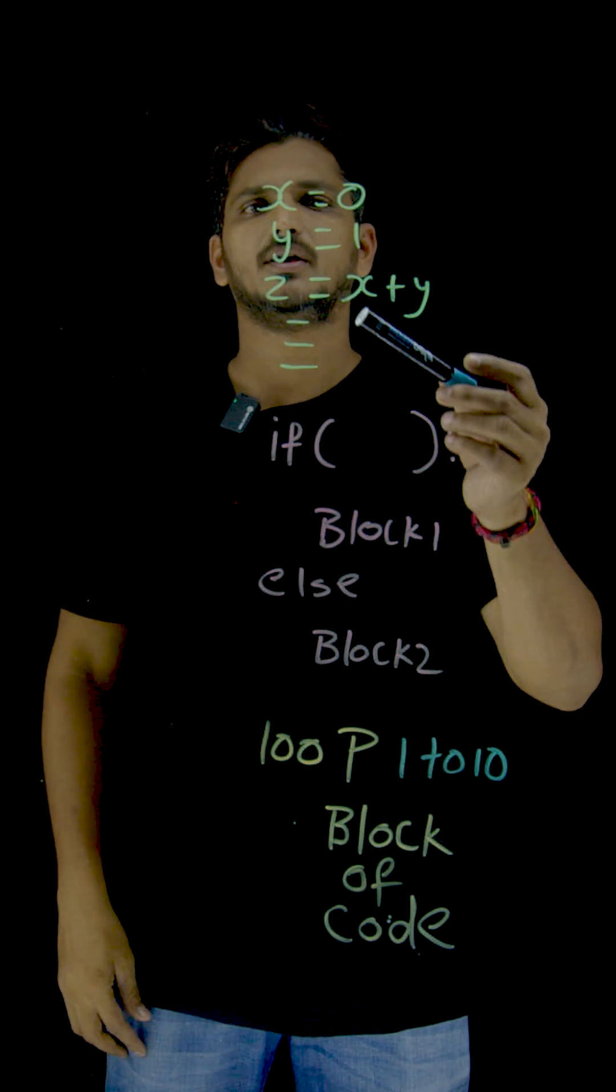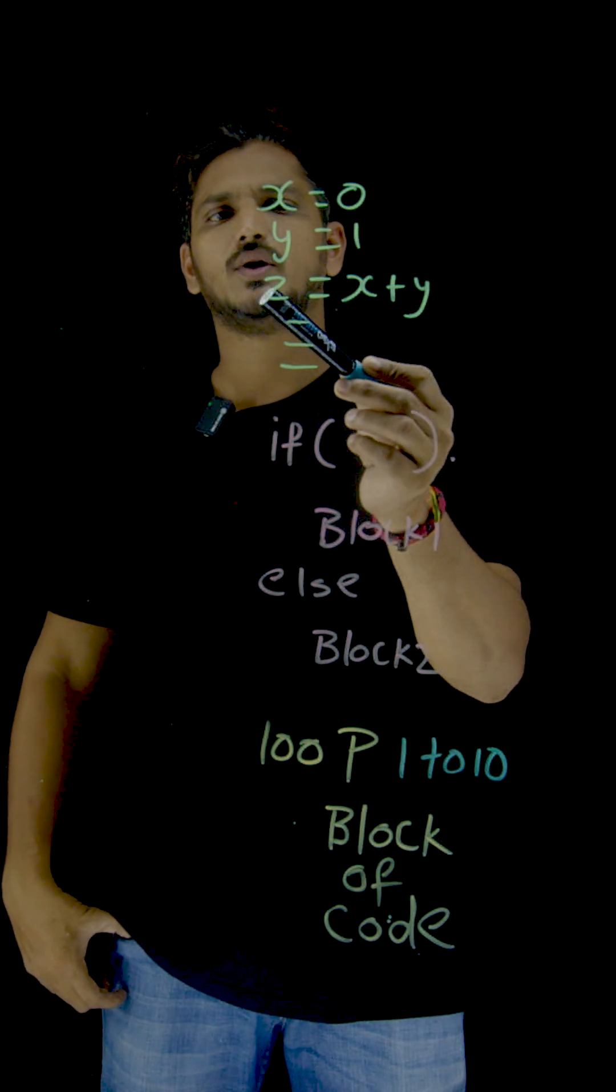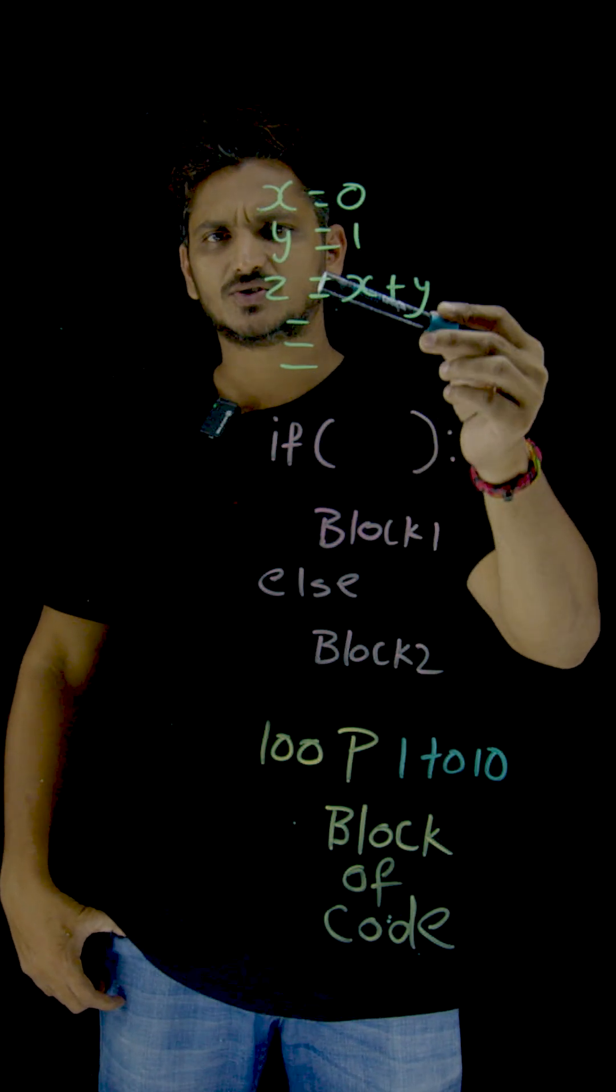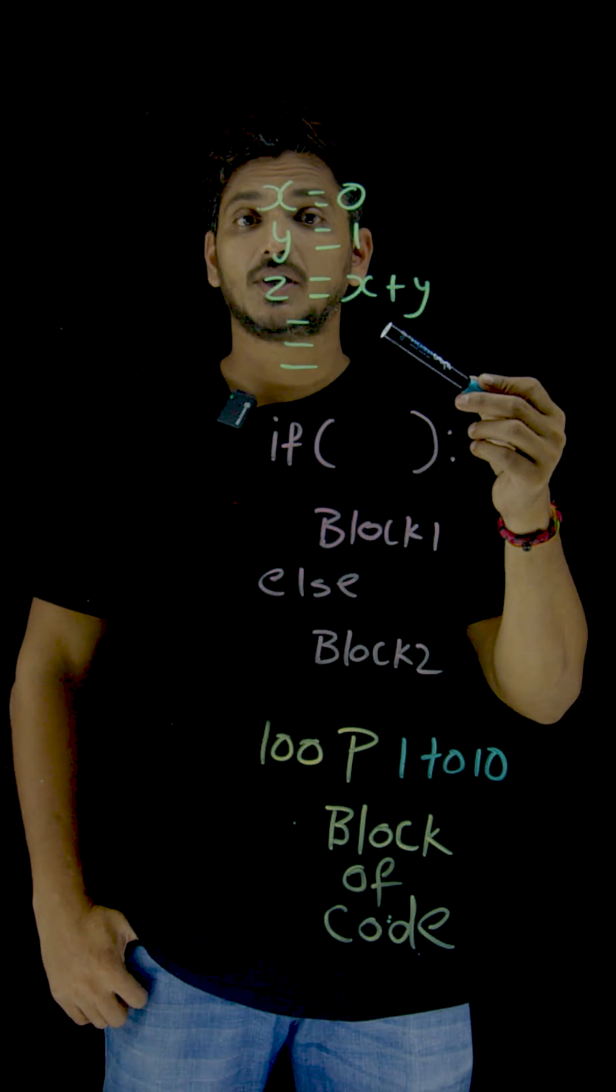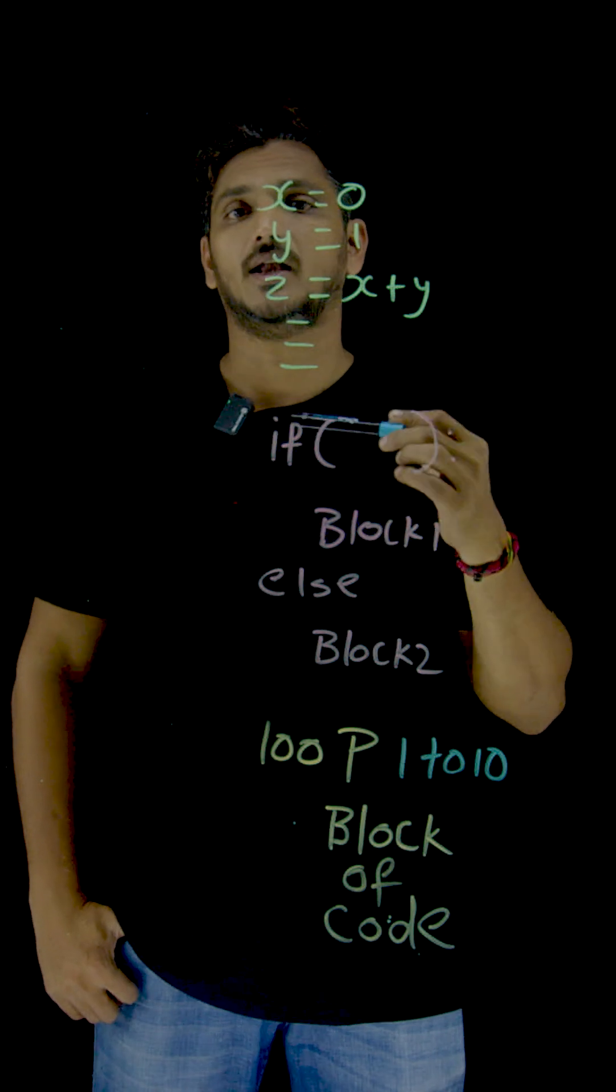This is how we have written the code: x equal to 0, y is equal to 1, z is equal to x plus y, like that step by step. And we understand the concept that coding executes line by line.